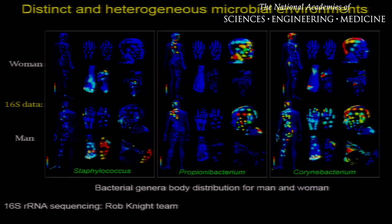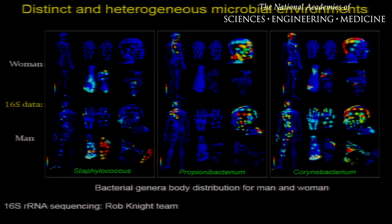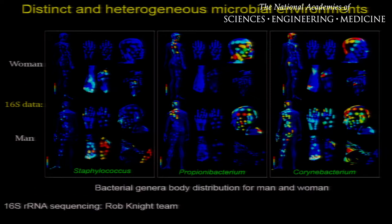Shown here are three examples. We found that Staphylococcus was mainly present in the moist areas around the nose and foot of the man and women. Propionibacterium was mainly present on the face, chest, and back area. Corynebacterium was mainly present on the head, feet, and toes of these volunteers. So using spatial mapping, we can identify specific regions of a habitat that are unique in microbes or molecules.